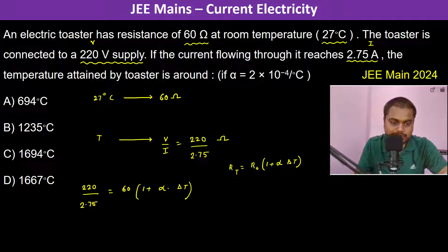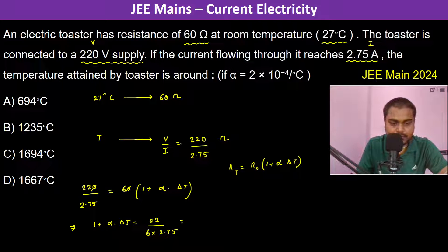So therefore, 1 plus alpha into Delta T is equal to 22 divided by 6 into 2.75 multiplied by 100. Simplifying: 11 is 2, 25 is 4, so this is 2, this is 3. So therefore alpha into Delta T...